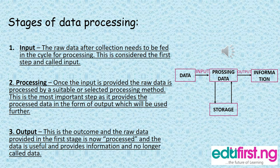Number two, we have the processing stage. Once the input is provided, the raw data is processed by a suitable or selected processing method. This is the most important step, as it provides the processed data in the form of output which will be used further. The data you are inputting — whether using your keyboard, mouse, pen, or any input device — goes into the machine where it is processed.